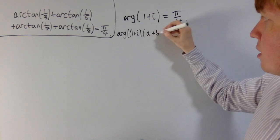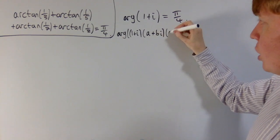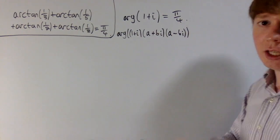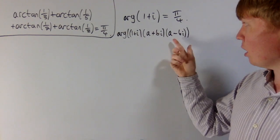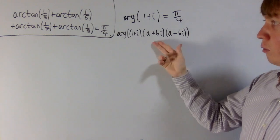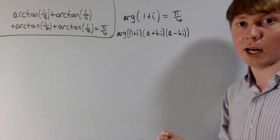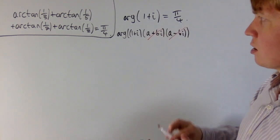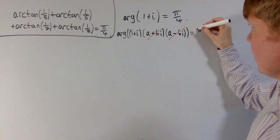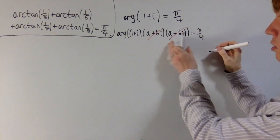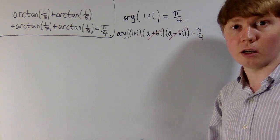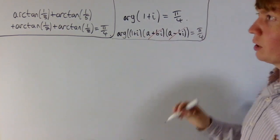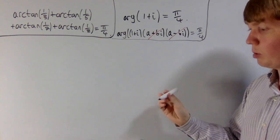If you've got one plus i and multiply it by a complex number a plus bi and also by its complex conjugate a minus bi, what is the argument? The argument of a minus bi is the negative of the argument of a plus bi, so when you multiply by both, the contributions cancel out and the argument remains pi over four. You can multiply by more than one pair of complex conjugates, and that's what we need here.